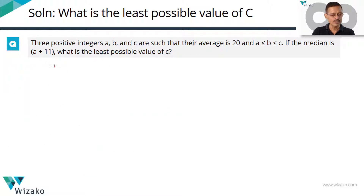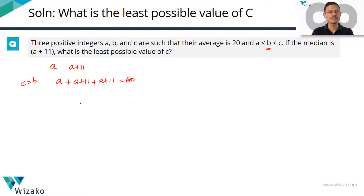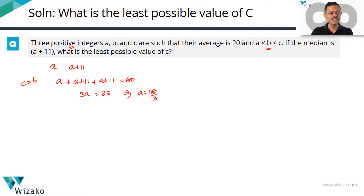Our objective is to find the least possible value for c. The second number b, which is the median, is a + 11. c has to be greater than or equal to b. To minimize c, let's first try c = b. That gives us: a + (a+11) + (a+11) = 60, so 3a + 22 = 60, meaning 3a = 38, and a = 38/3. This is not an integer, so b and c are also not integers. This case is ruled out.